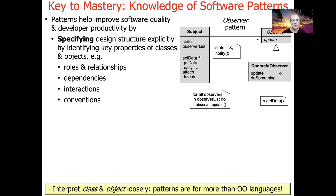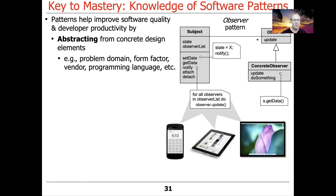When we talk about objects and classes in the context of these patterns, always take that with a grain of salt. You can use these patterns with C, which doesn't have any objects or classes. You can use these patterns with assembly code. We tend to use them with languages like C++, C#, Java, and Python that do have classes and objects, but never think that patterns are limited to an object-oriented context — they're not. That may be the preferred embodiment in some books, but the concepts are broader than that.